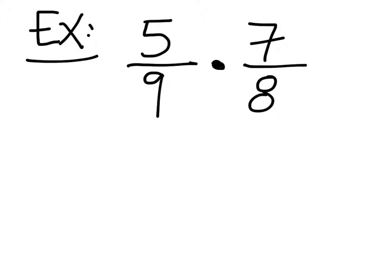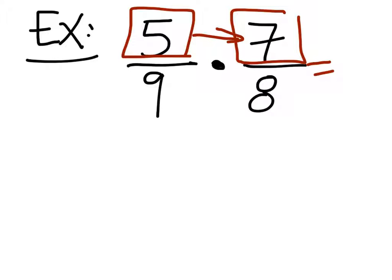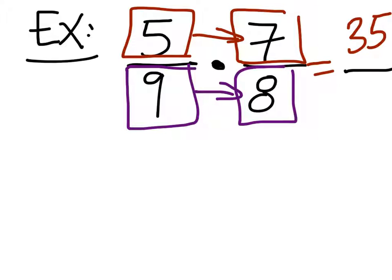All we're going to do is I'm going to take the numerators, the top numbers, five and seven, and multiply straight across. That's going to give me my numerator, the answer numerator. Five times seven is? Thirty-five. Then I look at the denominators, nine and eight, and I multiply these straight across. Nine times eight? Seventy-two. Now, we would look to simplify this. This does not look like it is simplifiable, so it stays.